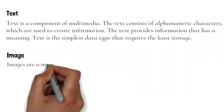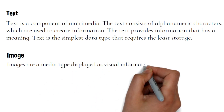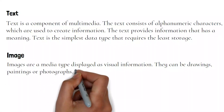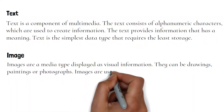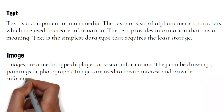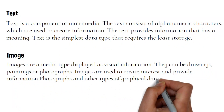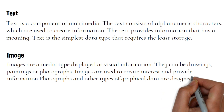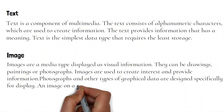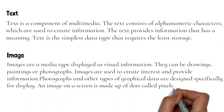Images are a media type displayed as visual information. They can be drawings, paintings, or photographs. Images are used to create interest and provide information. Photographs and other types of graphical data are designed specifically for display. An image on a screen is made up of dots called pixels.